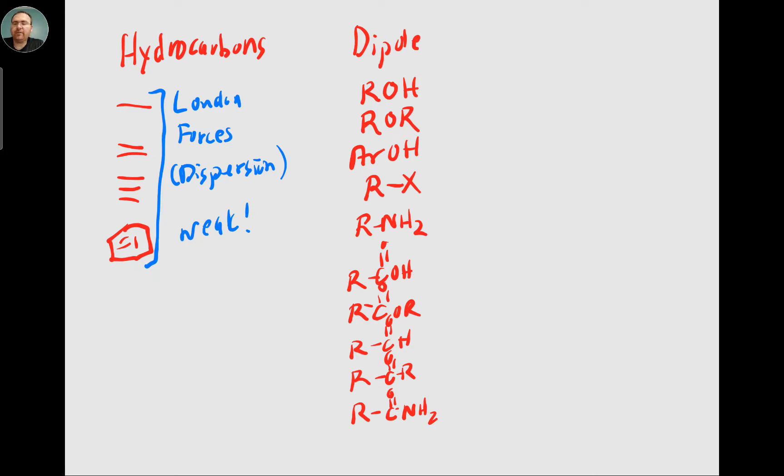All of these have dipoles. So whether it's the alkanes, alkenes, alkynes, so that A versus E versus Y ending, and then arene, all London dispersion forces. And it's true that everything in this second list also has London dispersion forces too, but they also have something more, and that's a dipole.